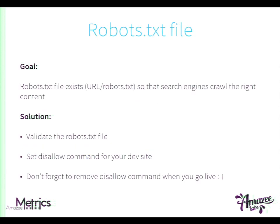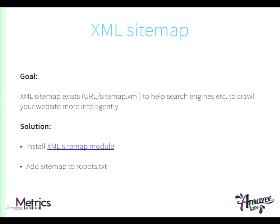The robots.txt file needs to exist so that search engines can crawl the right content. You can exclude things in the robots.txt file. What happened to us in the past is that we once added the disallow comment on the dev side and forgot to take it out. So just check before you go live if the robots.txt file exists — otherwise, no traffic. You also need an XML sitemap so that search engines know how to crawl your website intelligently. Just install the XML sitemap module and add the sitemap reference to the robots.txt.